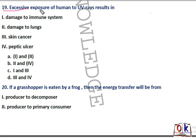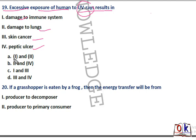Question number 19: excessive exposure of humans to UV (ultraviolet) rays results in which of the following? Options include damage to immune system, damage to lungs, skin cancer, and pepticals. Excessive exposure to ultraviolet rays causes damage to the immune system and skin cancer. So first and third — option C will be the right answer.